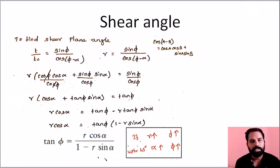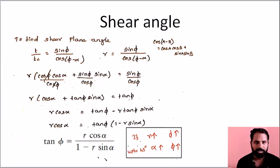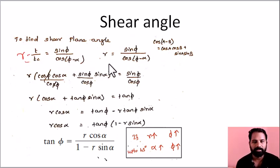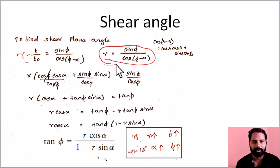If we derive the shear plane angle, we will derive the chip thickness ratio. The chip thickness ratio R is equal to T divided by Tc, which equals sin φ divided by cos(φ minus α).